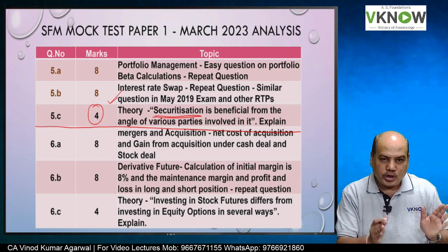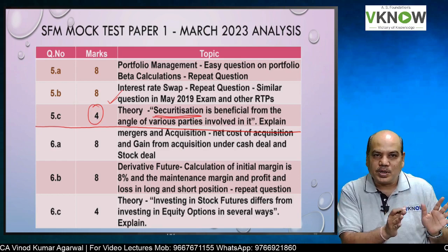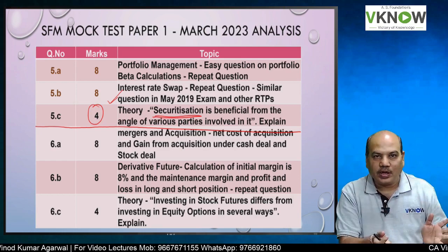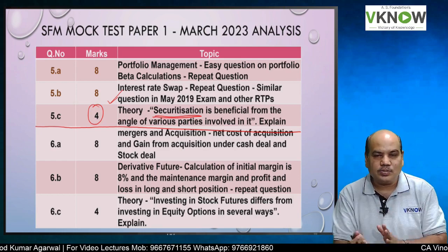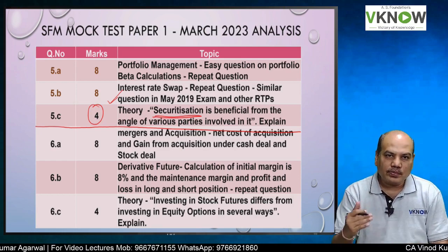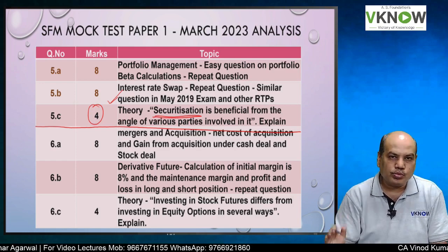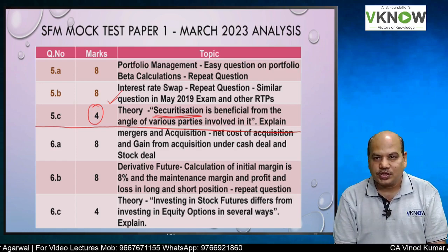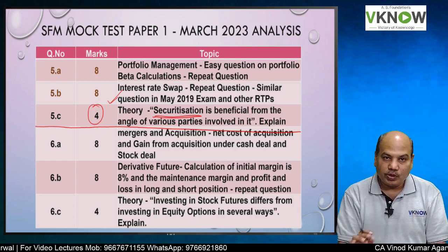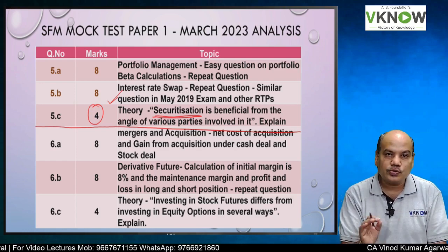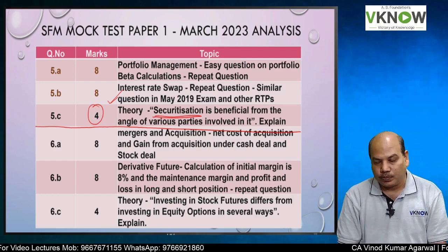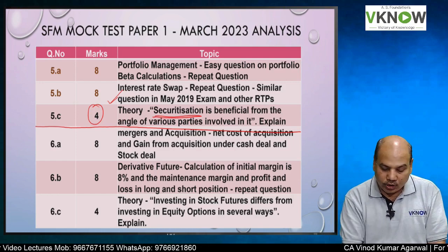Whether you can complete the paper in 3 hours or not — if you have been getting 30–40 marks in past exams, with practice I think you can move to the 60s and 70s, which will be really very useful for clearing your entire group.